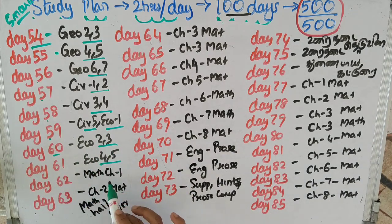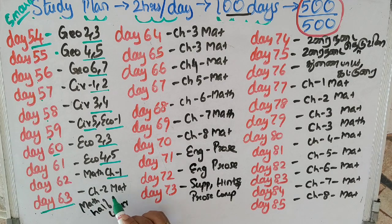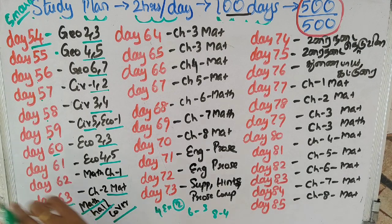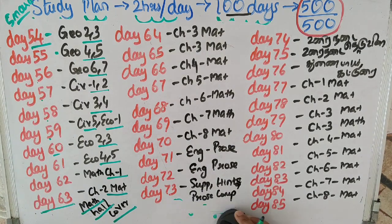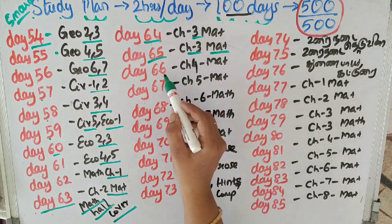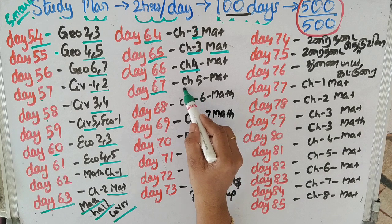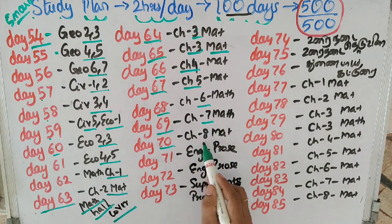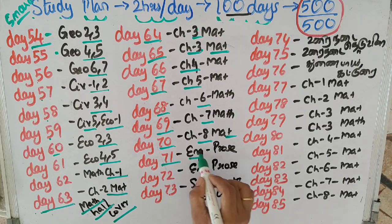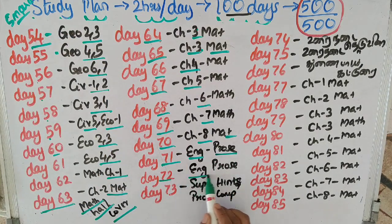Economics lessons 1, 2, 3 - then Economics 4 and 5. Day 62: Maths chapter 1, covering exactly half the chapter with exercises 2, 3, 4. Exactly half the chapter 5-marks covered. Day 63: Chapter 2 Maths half covered. Day 64: Chapter 3 Maths 5 marks. Day 65: Chapter 3 again. Day 66: Chapter 4 5 marks. Day 67: Chapter 5. Day 68: Chapter 6. Day 69: Chapter 7. Day 70: Chapter 8 half portion 5 marks.